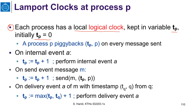When a process p sends a message, it piggybacks the pair — the logical clock tp and the process identifier — on every message sent. If event A is an internal event, then the logical clock is first incremented, and then the process performs the internal event A. If the event is a send event of a message M, then the process first increments the clock and then sends the message together with the timestamp pair (tp, p).